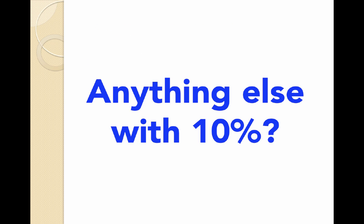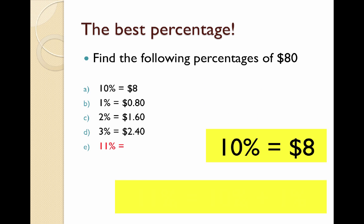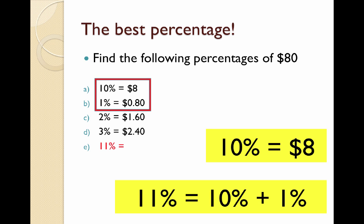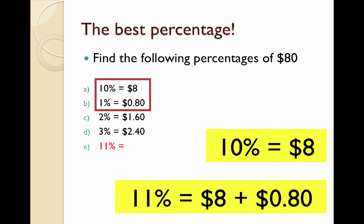Is there anything else we can do with 10%? Absolutely. What if I wanted to find 11%? Much like we found 15%, I can add 10% and 1% together, or $8 and 80 cents, to get $8.80. You can combine any percentages to find other percentages. For instance, 12% is 10% plus 2%, and 13% is 10% plus 3%.